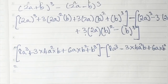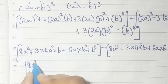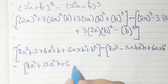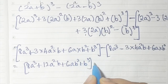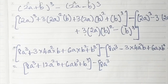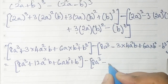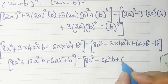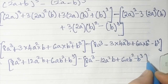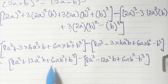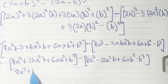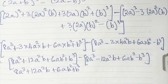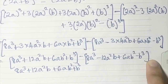Now let's open the brackets. The first bracket comes down as it is: 8a³ + 12a²b + 6ab² + b³. But when we open the second bracket, since there's a negative sign in front, the signs of all terms inside are going to change.